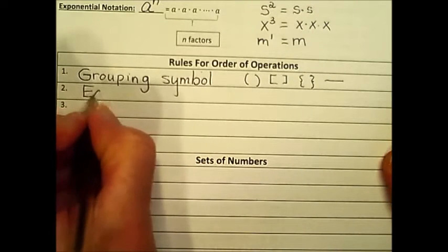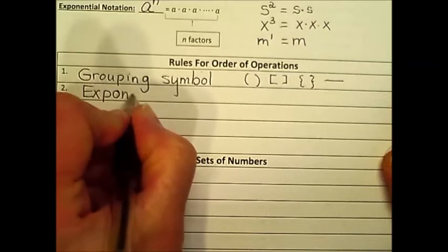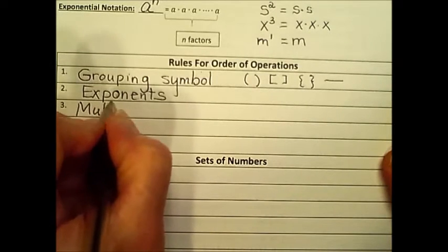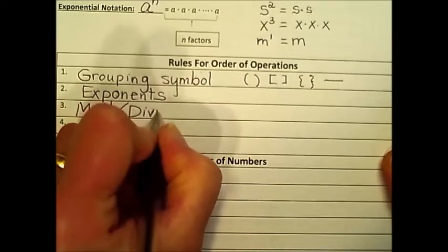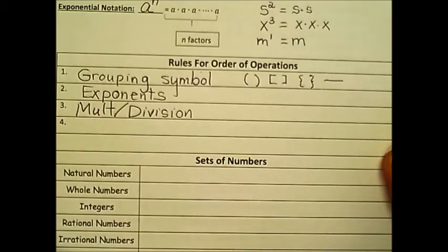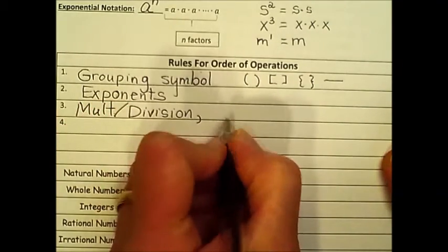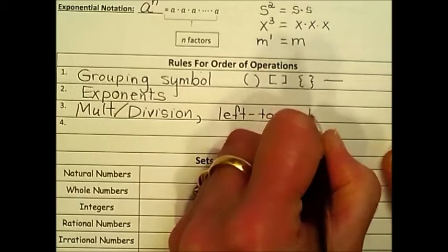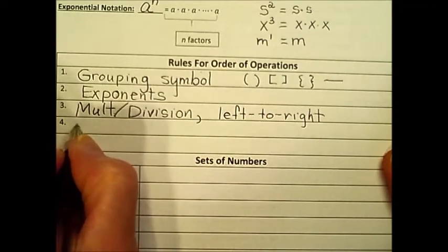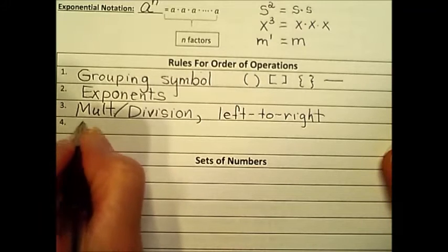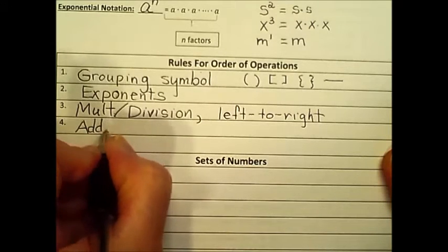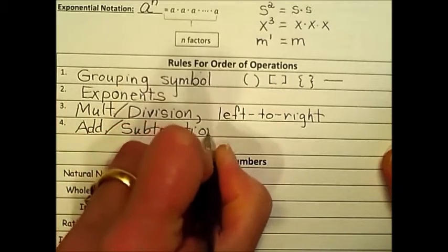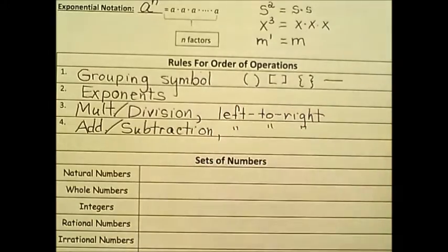Next, we will do any exponents or powers. Next priority is multiplication and division. They have equal priority. And so how do we decide? It is left to right. And the last operation that we will perform to simplify a numerical expression is addition and subtraction. And to do that, we'll do the same thing, left to right.